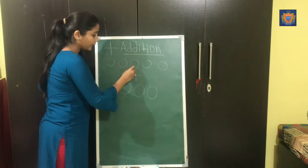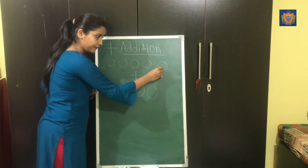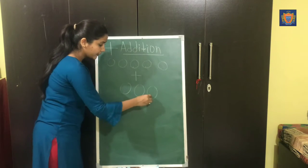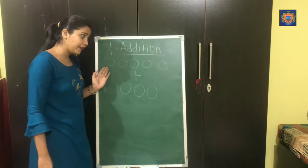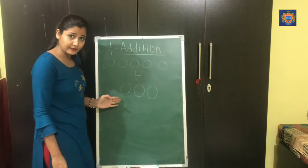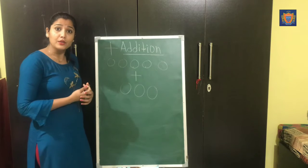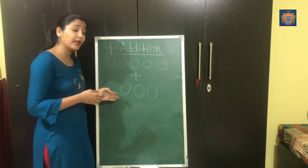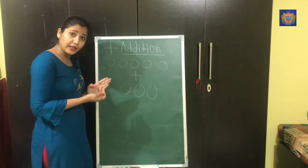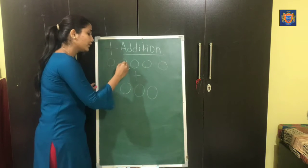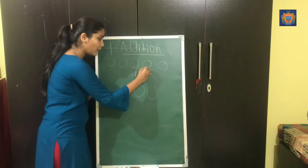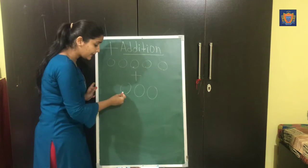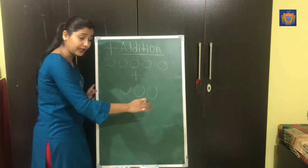Let's count: one, two, three, four, five. And one, two, three. Here are five circles and here are three circles. Now we have to add them. Ab isko kaise count karenge? Yeh five hai, yeh three hai. The method of counting is: one, two, three, four, five — yahan pe five pe finish hua. Then from here, don't start from one again.